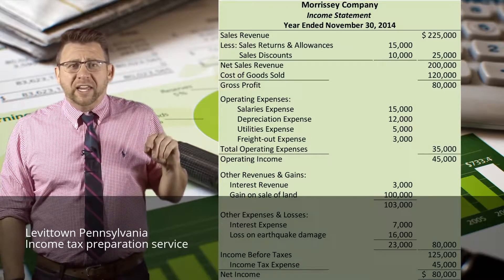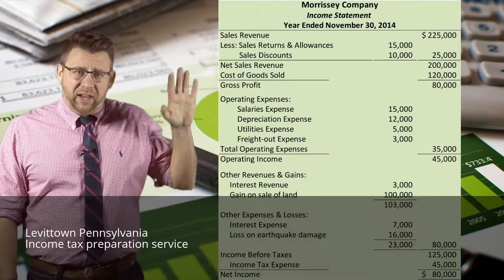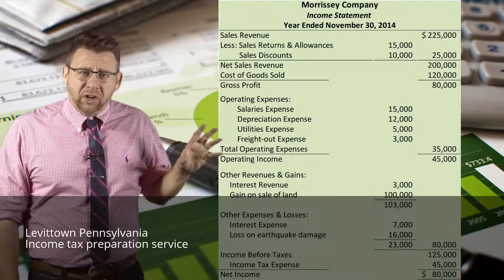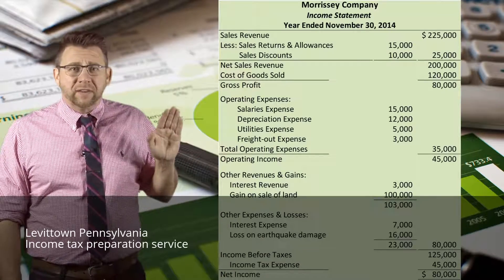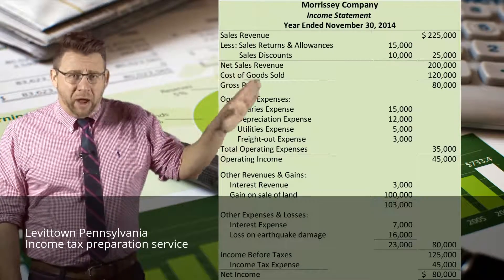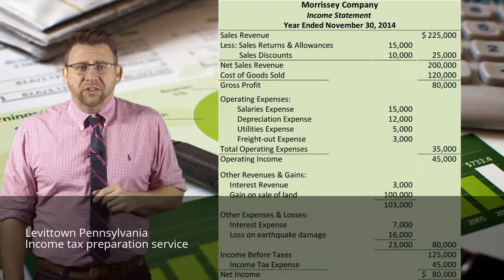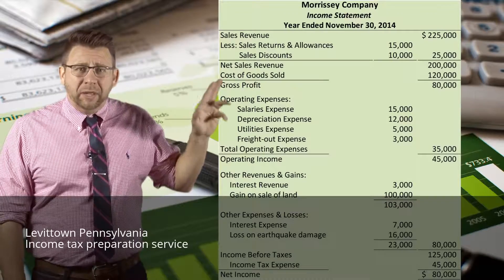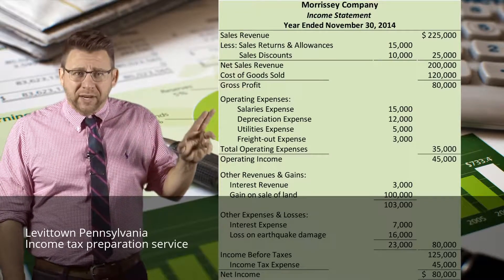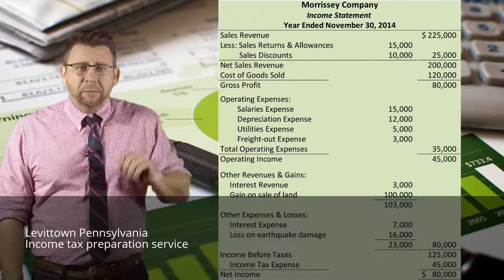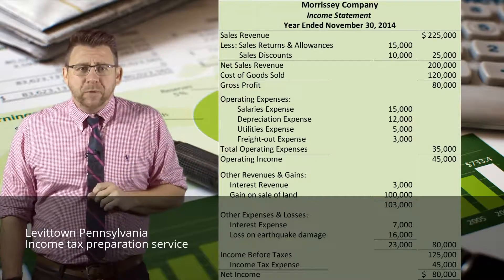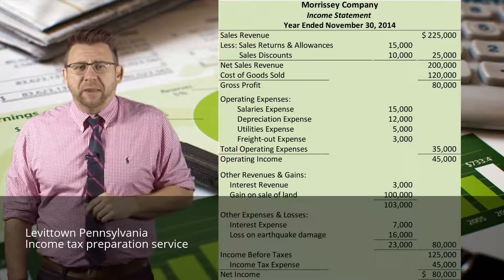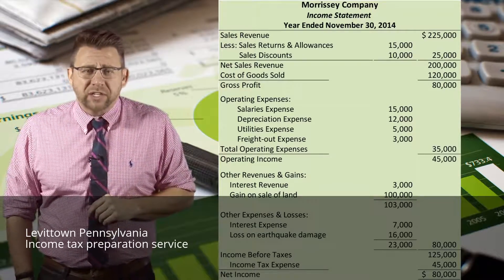Again, you will see items on an inner column being subtotaled and then that amount being carried to the outer column. Again, that does not mean debit or credit, so please remember that. Now let's look at the multi-step income statement more closely.